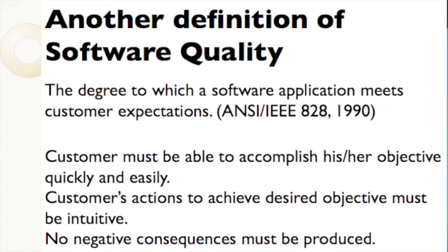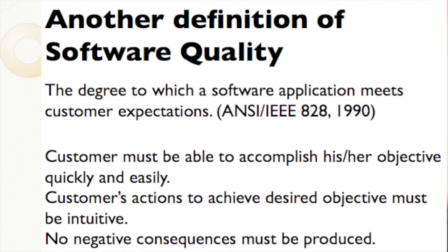Increasingly, we're finding there's probably another way to define software quality. Traditionally, people were of the mindset that when you build a software application or website, it either worked or it didn't. Many people on cable networks complained that the White House put out a statement saying the website was now 90% operational — and people said, well, that's a lie, because websites either work or they don't.